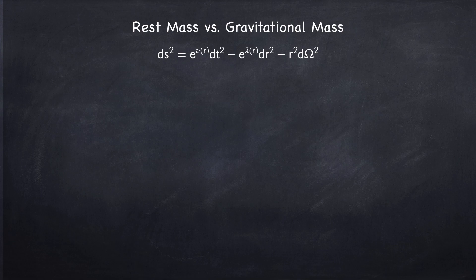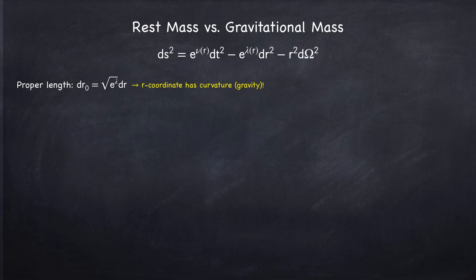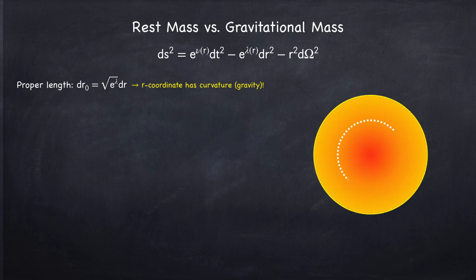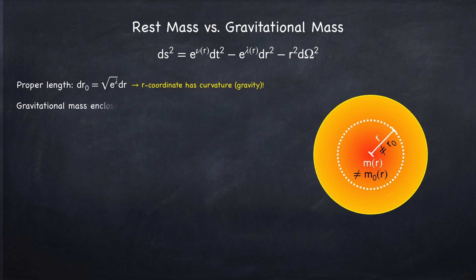What's important here is that the proper length, which corresponds to locally measured distances — denoted r₀ — is not equal to the coordinate length r. This is what we mean when we say we have a curved spacetime. The r-coordinate does not account for curvature, which is what we experience as gravity. The consequence is that for a star, the radial position r does not equal the proper distance, and the mass enclosed is not equal to the proper mass enclosed. So we have a distinction between the gravitational mass and the proper mass.